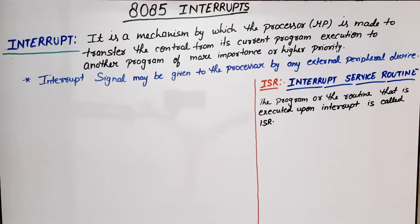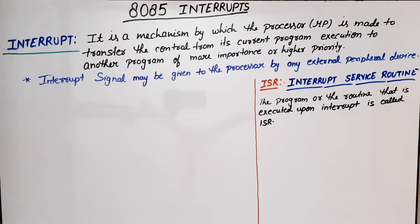Suppose I am recording a lecture and meanwhile my phone rings. That is the interruption for my lecture — it will interrupt our lecture. Suppose I am recording from mobile, so recording is going on, but if a call comes, then recording is stopped. The program is transferred to the call from the previous program — that is called an interrupt. In case of a microprocessor, interrupt is a mechanism.